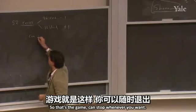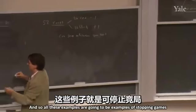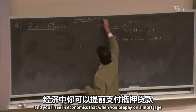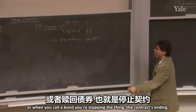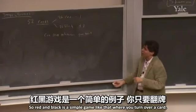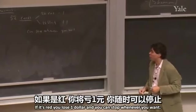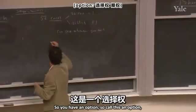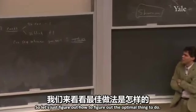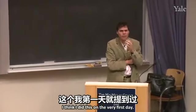You'll see in economics that when you prepay a mortgage or call a bond, you're stopping the contract. You want to know when's the right time to take an action like that. So Red and Black is a simple stopping game: turn over a card, win a dollar if black, lose a dollar if red, and stop whenever you want. So you have an option — and most people totally underestimate the value of options. Let's figure out the optimal thing to do. Would you play if given the chance?